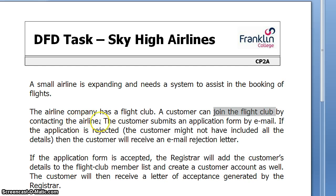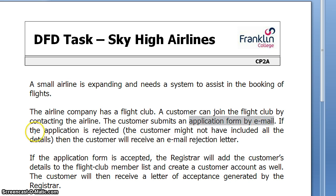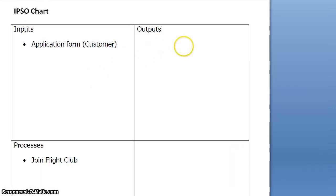They contact the airline. The customer submits an application form by email. So we've got there an input: application form, and this has come from the customer. If the application is rejected, the customer might not have included all the details. The customer will receive an email rejection letter. So this gives us an output: email rejection letter, and that has gone to the customer.